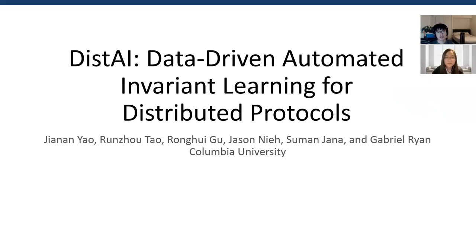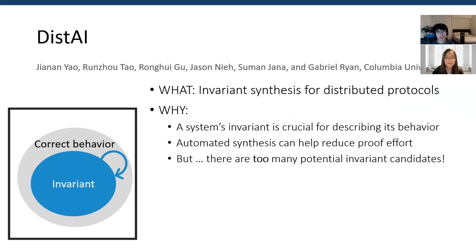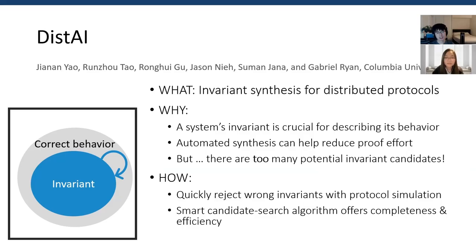The first paper is titled DISP AI: Data-Driven Automated Invariant Learning for Distributed Protocols, from Columbia University. The paper looks at invariant synthesis — invariants can help prove distributed protocols inductively. If we can automatically synthesize invariants of the target system, we can reduce manual efforts in describing and improving the system. The challenge is that there are too many potential invariant candidates, and checking whether every expression is an invariant with a solver takes a lot of time. This paper uses trace data simulated from the protocol to quickly reject wrong invariants, reducing the number of solver queries. Moreover, it visits all invariant candidates in a clever order to ensure every invariant with a bounded size is visited.